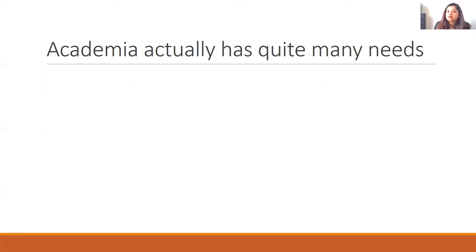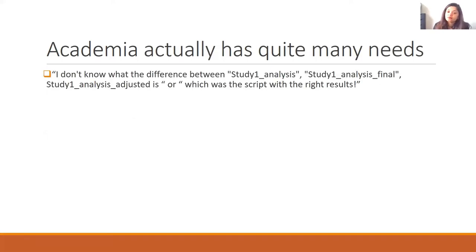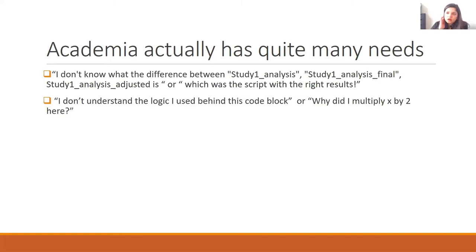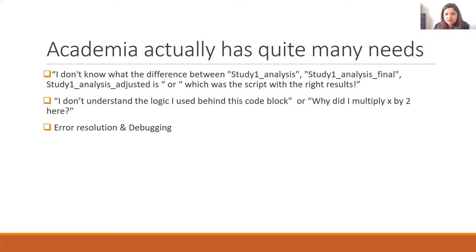Then we often come across the question of: what does this code really do? Or what is this specific section doing? Why have I multiplied this variable by two and not four, where it should have been four? We often save our files as 'study one analysis', 'study one analysis final', 'study one analysis adjusted', 'study one analysis final final — this time it's really final' — and you don't know which version was the correct one, which version was the one that you used. Error resolution and debugging becomes quite a hassle.